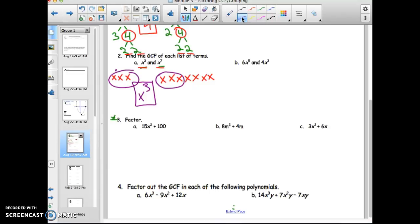Another way to look at it, the smallest variable listed, the smallest power listed between variables is going to be your GCF for variables. In this case, x to the third was the smallest, so that's my GCF. Moving on to part B to end this video.